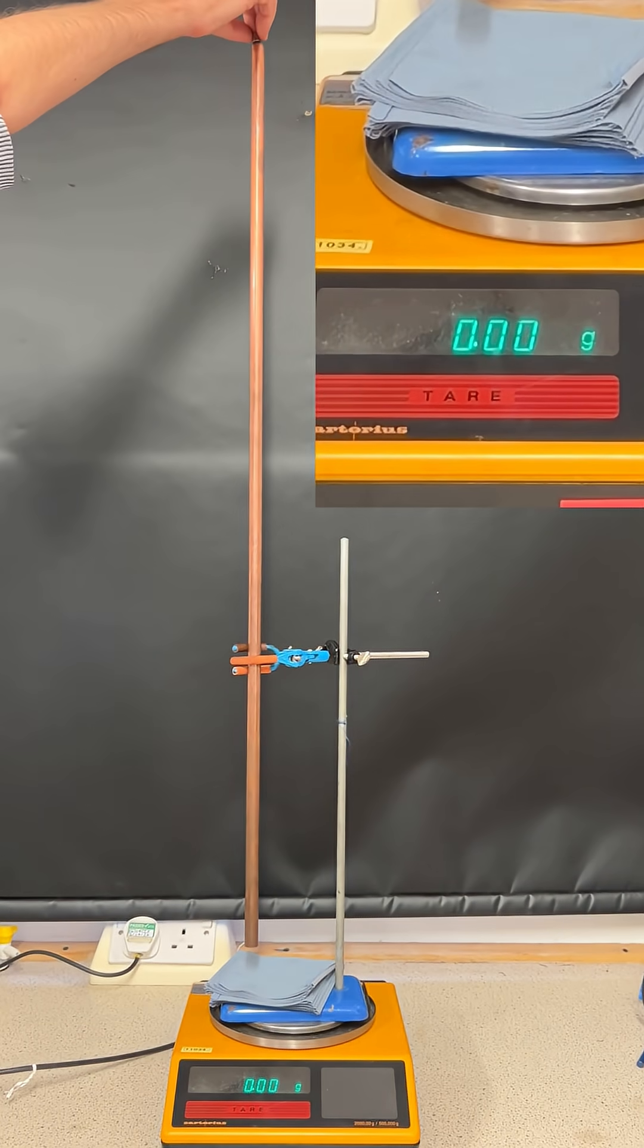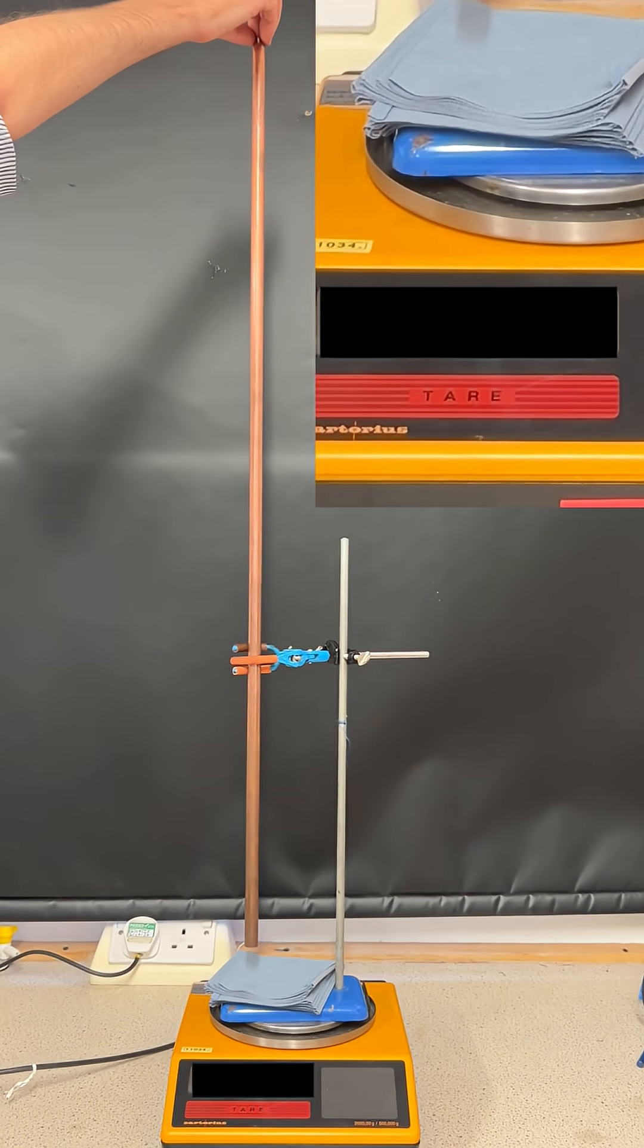I have a copper pipe held in a clamp stand all on top of a balance which I've zeroed, but can you predict what will happen to the balance reading when I drop a magnet through the copper pipe?